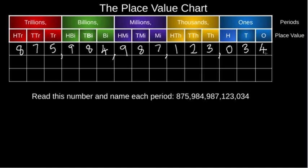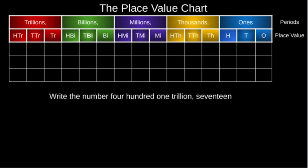That's a huge number. We can also identify the place value of every digit mentioned here. Let's take some more examples. Can we write this number out? Write the number four hundred one trillion seventeen. Let's make use of the place value chart to aid the ease of doing this — changing it from word form to number form. Remember, whatever you have before the period stays together as a whole group.